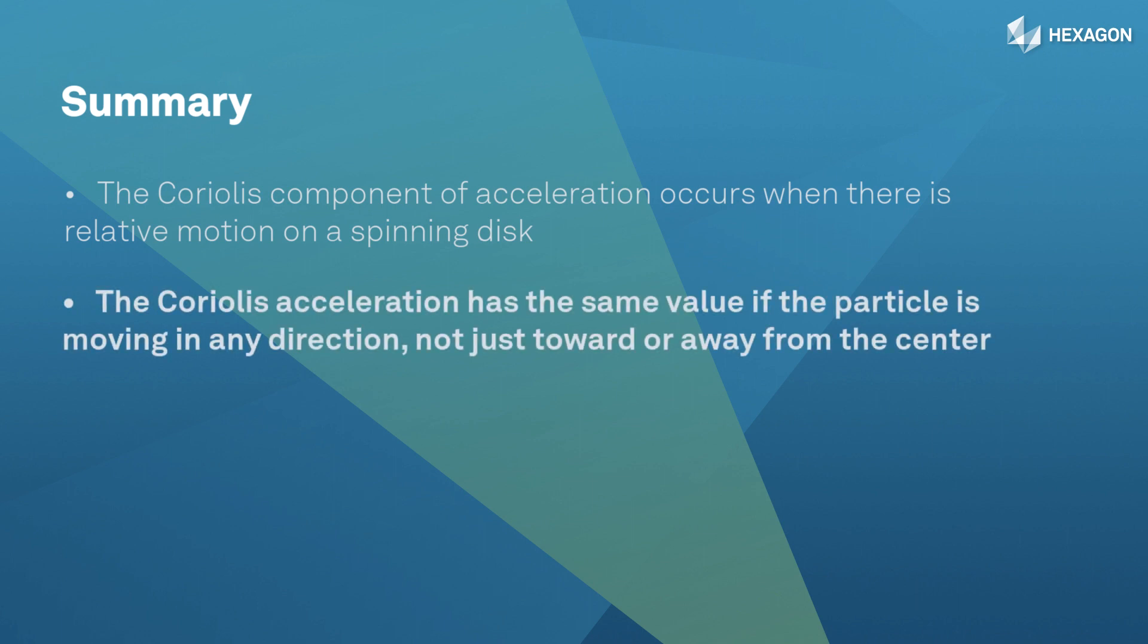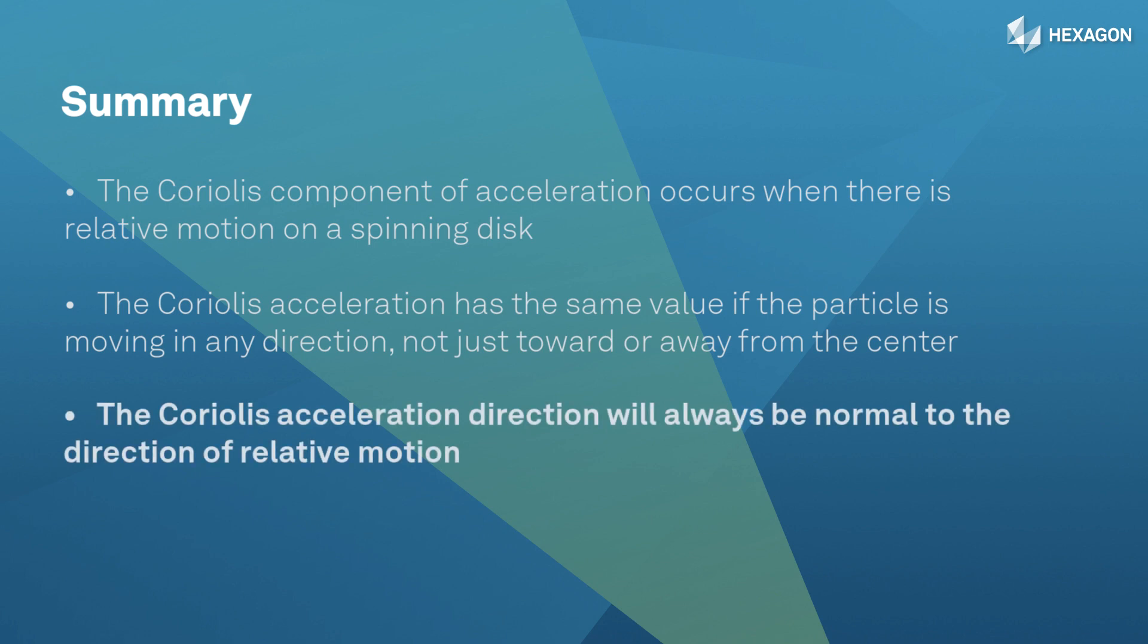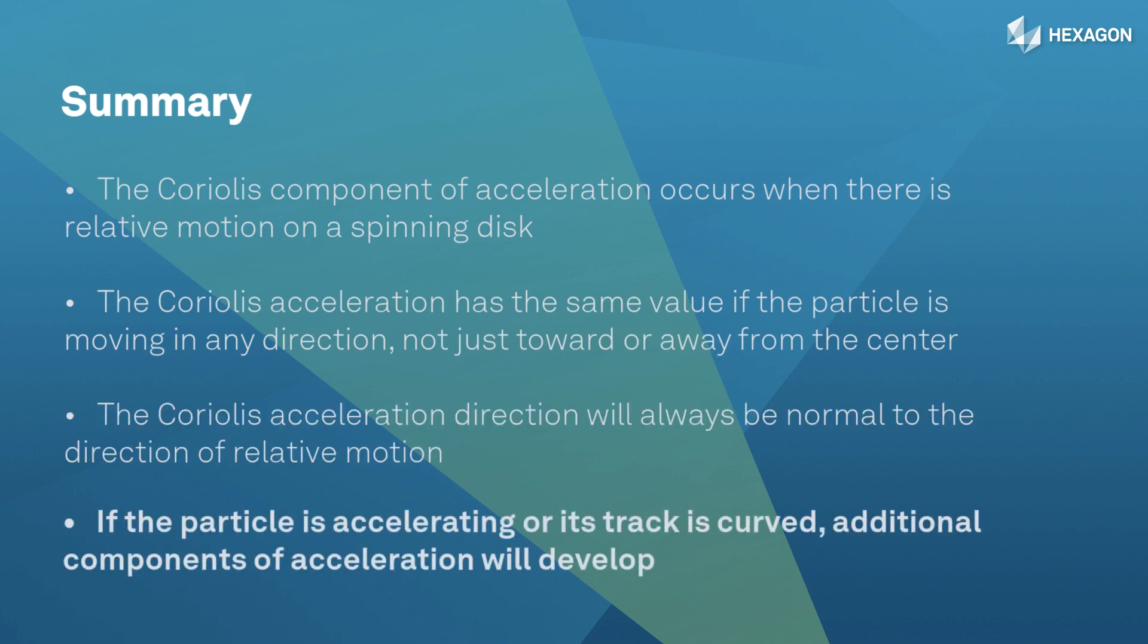It should also be mentioned that the Coriolis acceleration has the same value if the particle is moving in any relative direction, not just toward or away from the center. But its direction will always be normal to the direction of relative motion. Also, if the particle is accelerating or the track is curved rather than straight, additional components of acceleration will develop.